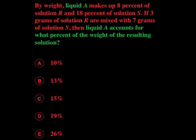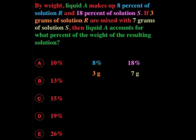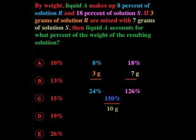We could do it the old-fashioned way. We could just say, if we have 8% of one and 18% of the other, and we multiply one by 3 grams and the other by 7 grams, we get 24% for one and we get 126% for the other. We add those together and get 150%. We divide it by the 10 grams and we get 15% per gram. There's answer C.